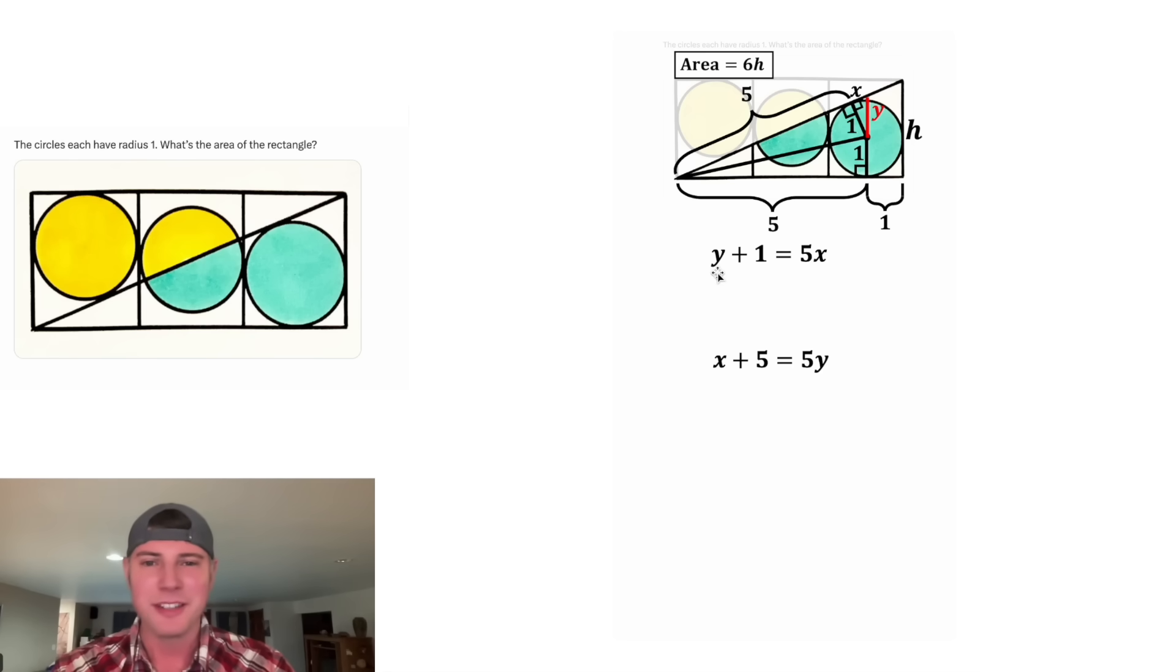First, let's get this y all by itself. Let's subtract one from both sides. And we end up with y is equal to five x minus one. And then for this equation, in the place of this y, let's plug in five x minus one. Next, this five will distribute to both of these terms. So we'll have 25x minus five.